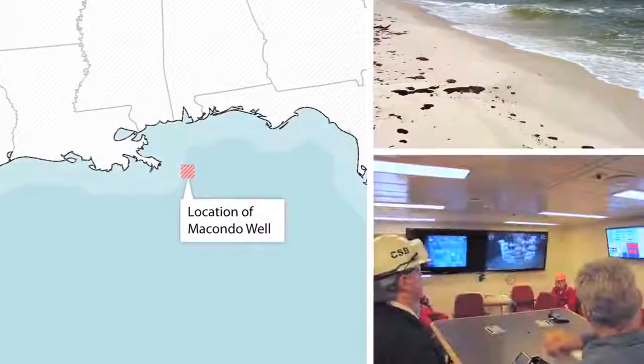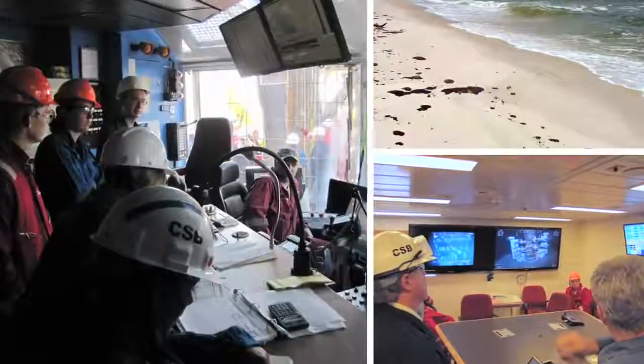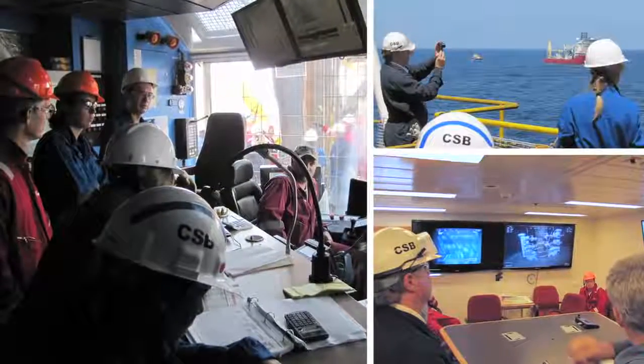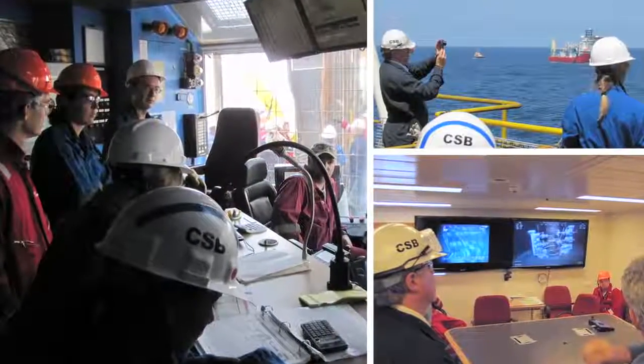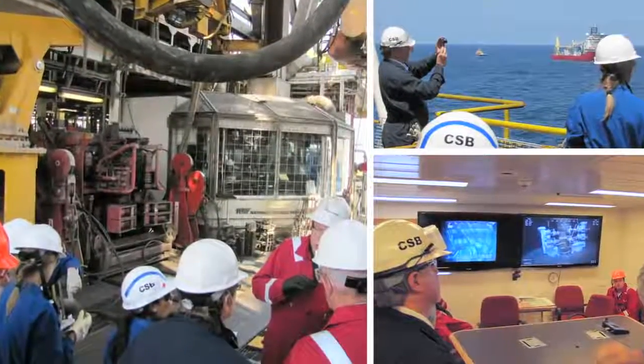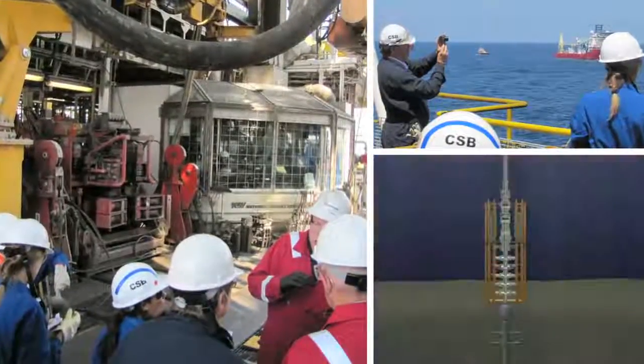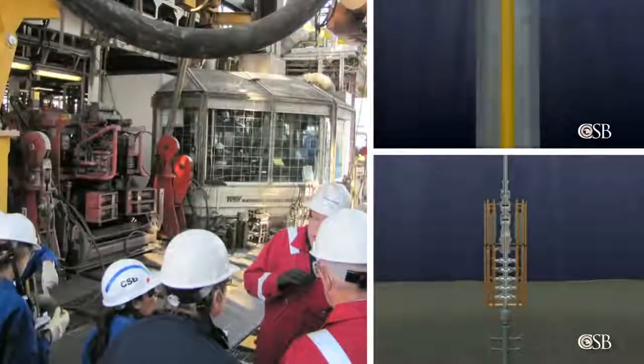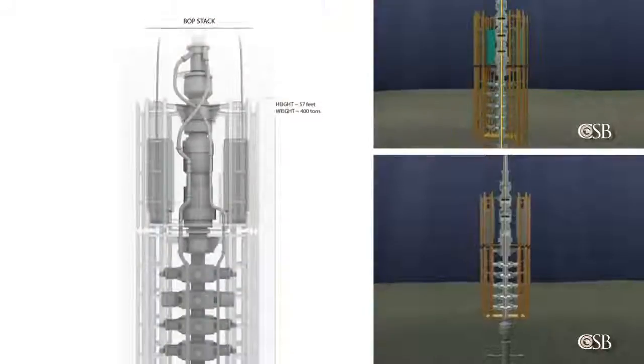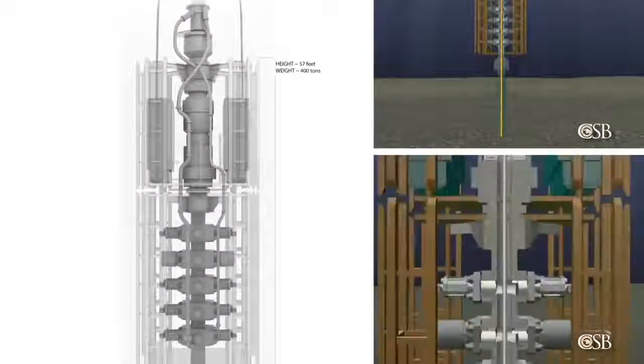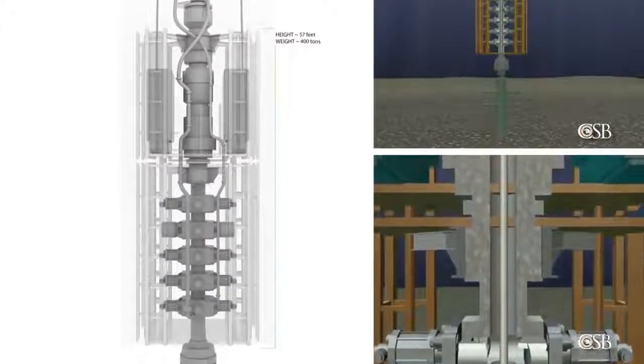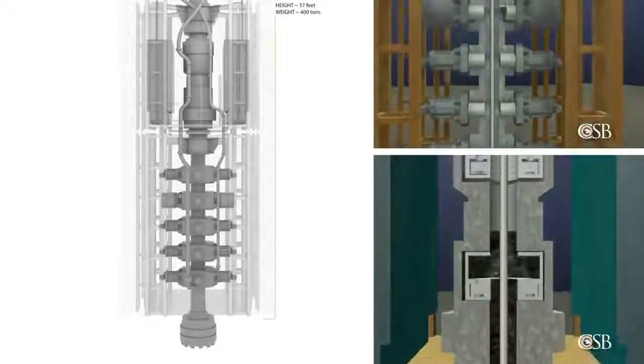In 2010, the CSB launched an investigation to examine the technical, organizational, and regulatory factors that contributed to the accident. During the investigation, the CSB made new findings about why a key piece of safety equipment, the Deepwater Horizon's blowout preventer, failed to seal the well during the emergency.